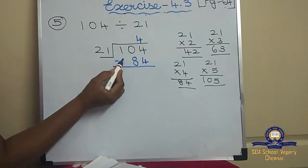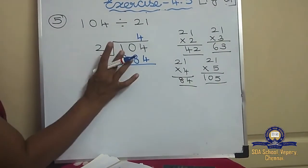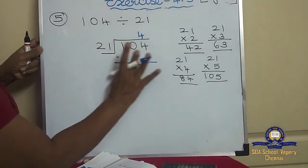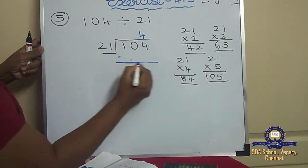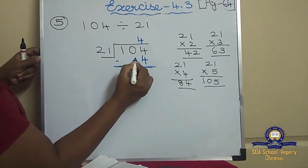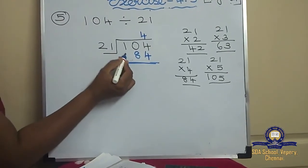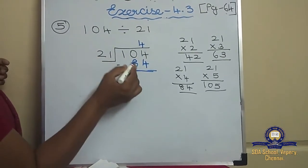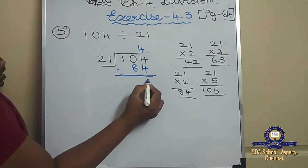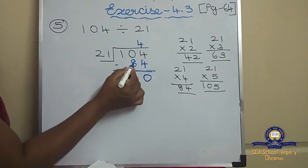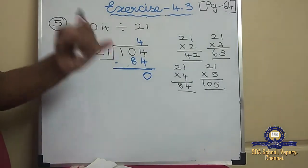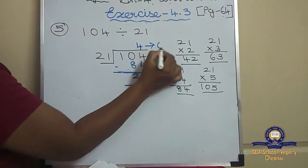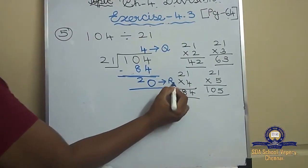When you write 84, start from the ones place — 4 in the ones place and 8 in the tens place; the hundreds place should be empty. Now subtract 104 minus 84: 4 minus 4 is 0. After 8, count up to 10: 9, 10 — that's 2. So the quotient is 4 and the remainder is 20.